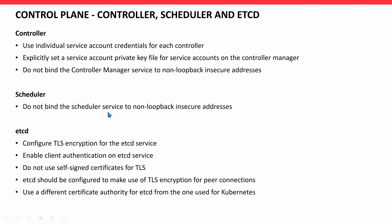For the Scheduler, do not bind the scheduler service to non-loopback insecure addresses. For the etcd database: configure TLS, enable client authentication on the etcd service, and do not use self-signed certificates — use a CA authority or commercial certificate to protect etcd. etcd should use TLS encryption for peer connections, and if you have etcd high availability, communication between all etcd nodes should use TLS. Use a different certificate authority for etcd than the one used for Kubernetes.